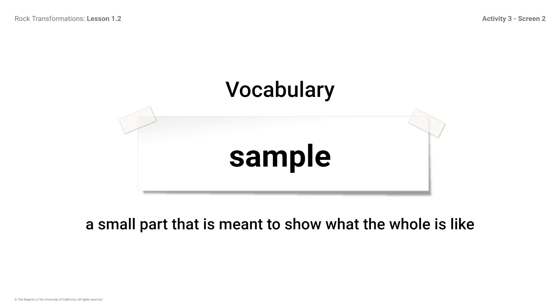Vocabulary: Sample - A small part that is meant to show what the whole is like. The rocks you will be observing are called hand samples. A hand sample is a piece of rock you can hold in your hand or analyze in a lab that can give you information about the rock formation it came from. Geologists collect and study hand samples because they can be used to understand which minerals are in a rock formation and how the rock formation formed. Hand samples can also tell us about the environment the rock formation formed in, for example, in a shallow water or in a deep ocean.